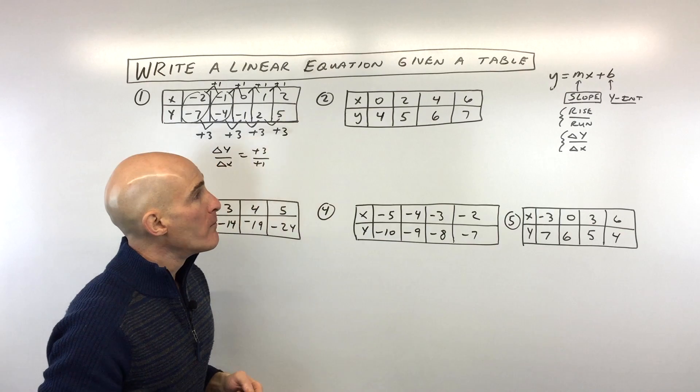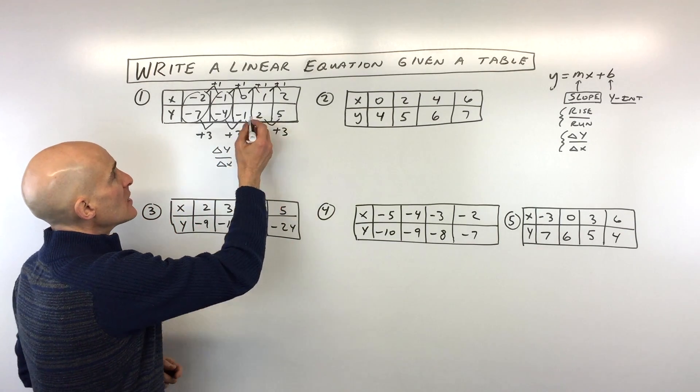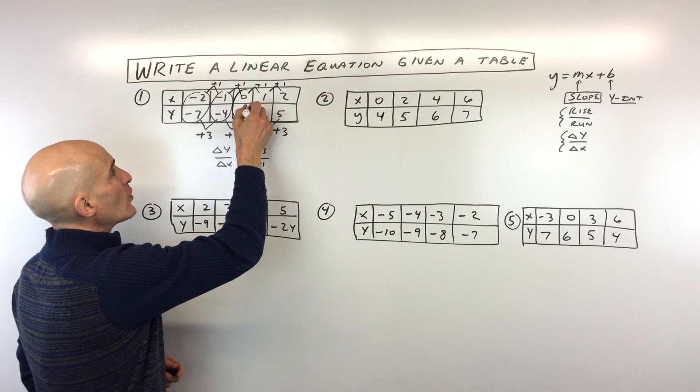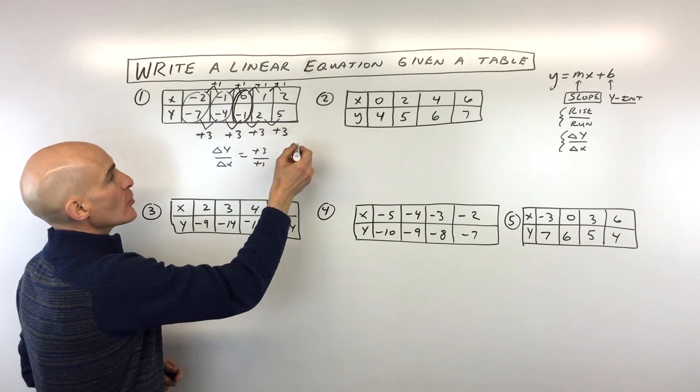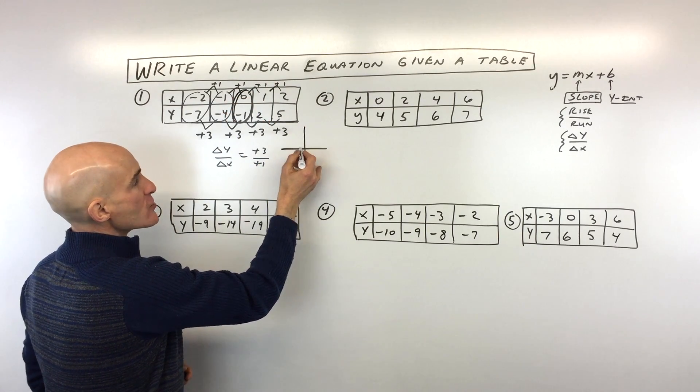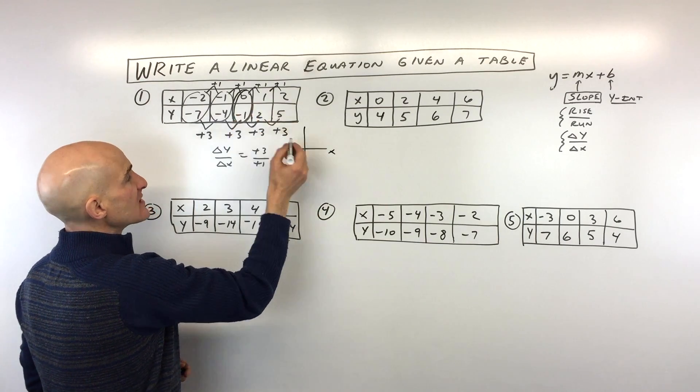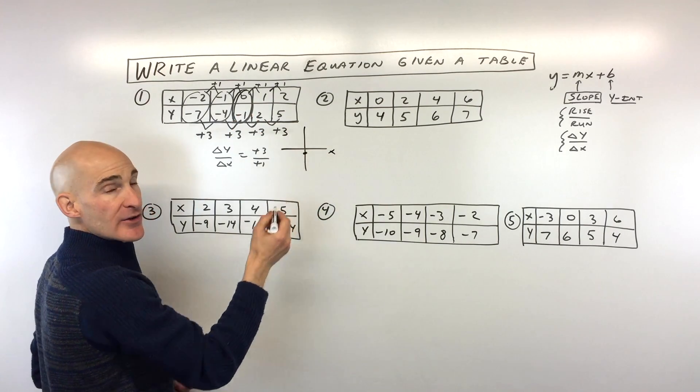What about the b value, the y-intercept? Well, the b value, the y-intercept, that's when x is 0. When we look at a graph, when x is 0, you're not going left or right on the x-axis. You're just going, in this case, down 1. So that's our y-intercept.